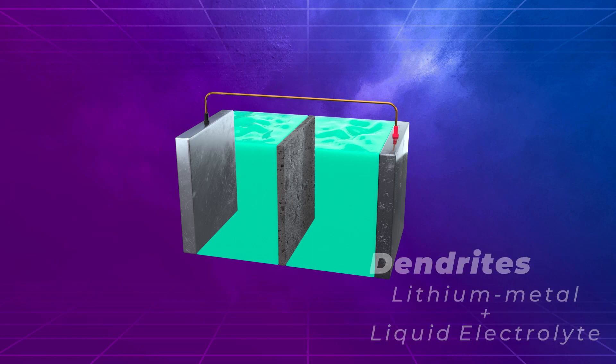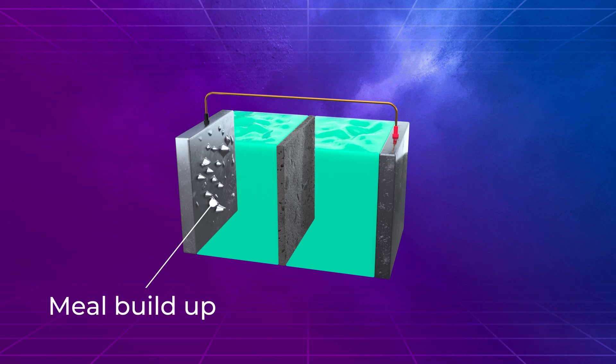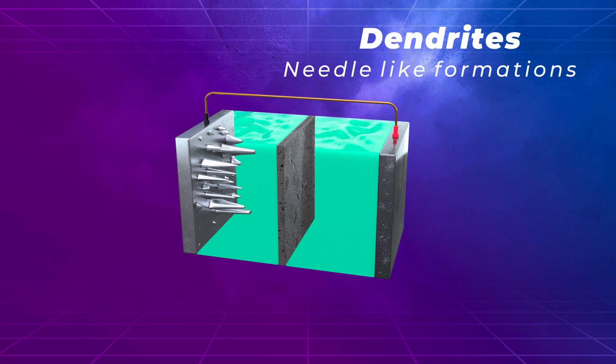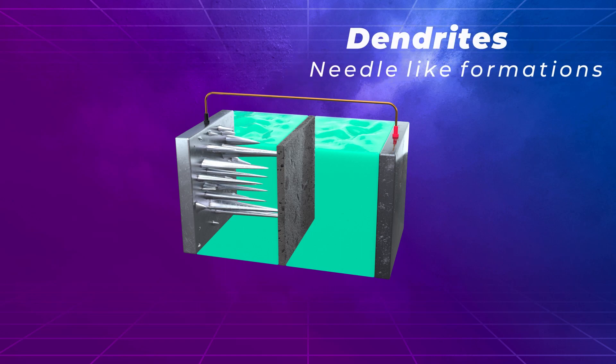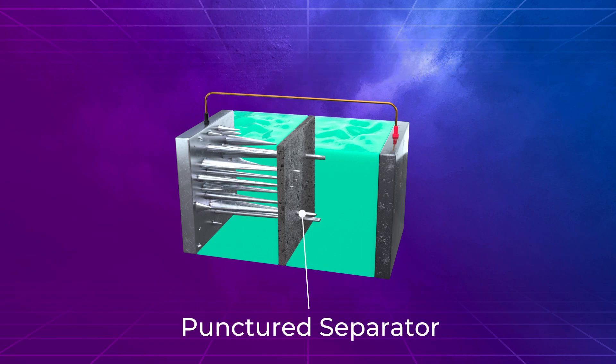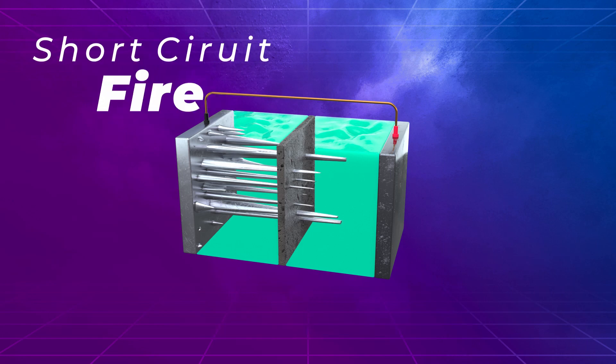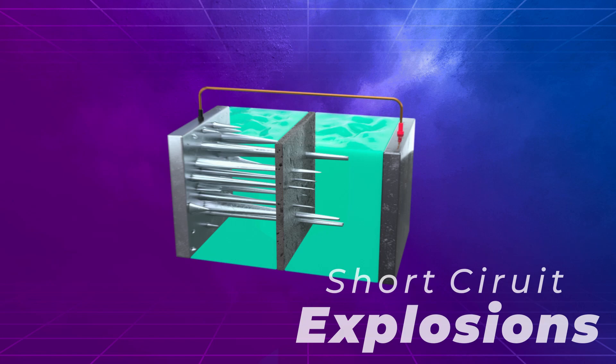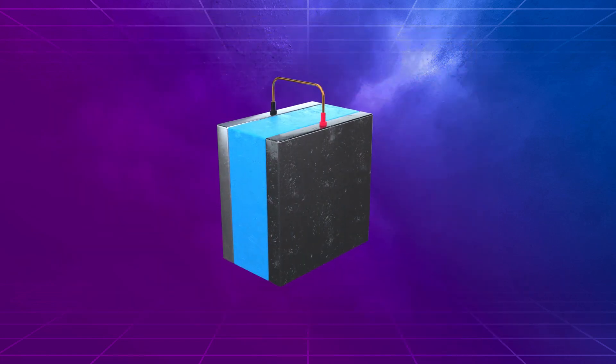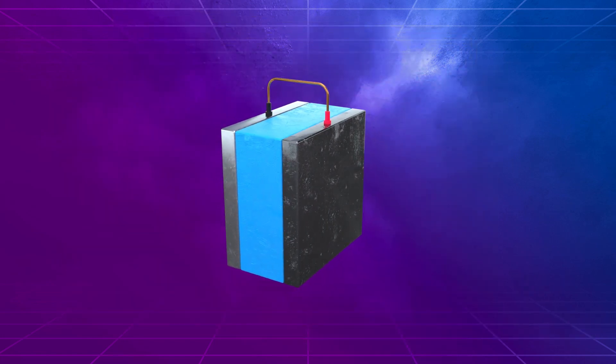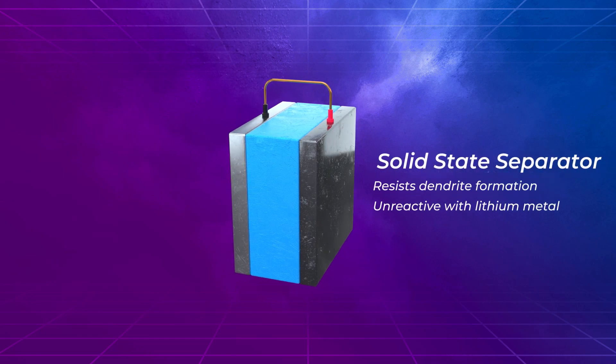However, it has been known that lithium metal anodes do not work with conventional liquid electrolytes due to dendrite formation. Metal can build up on the anode and slowly create dendrites, needle-like formations, and those can extend and puncture the separator between the anode and the cathode, which can cause short circuits and lead to fires or even explosions.